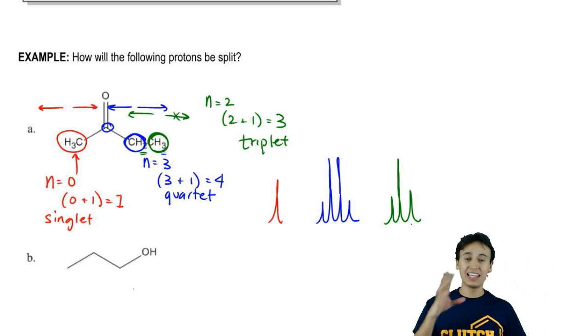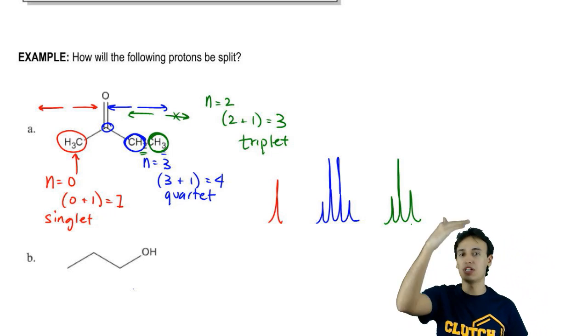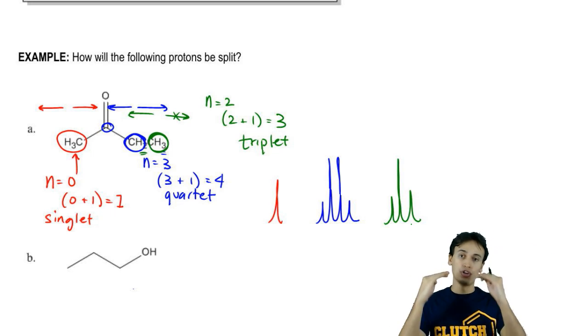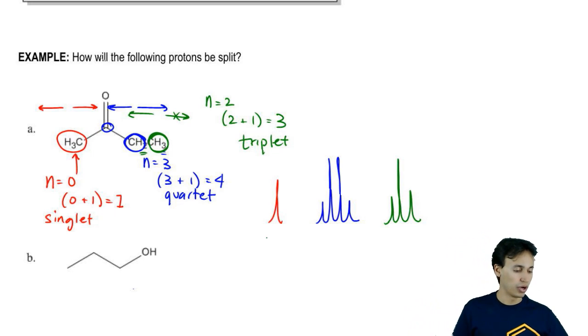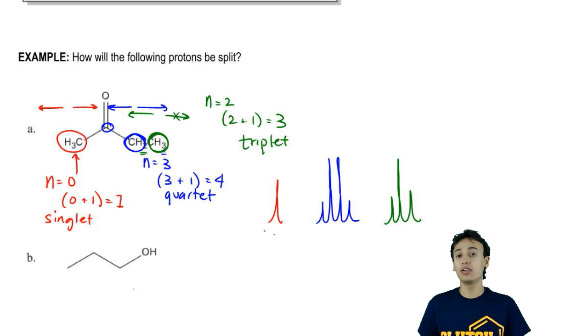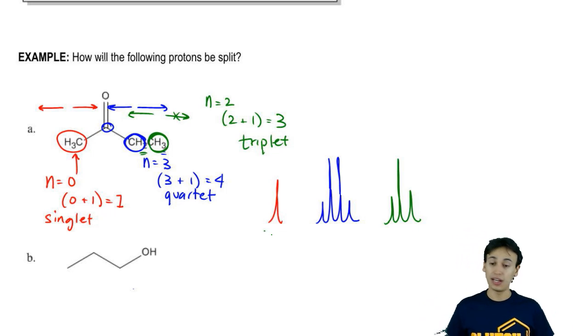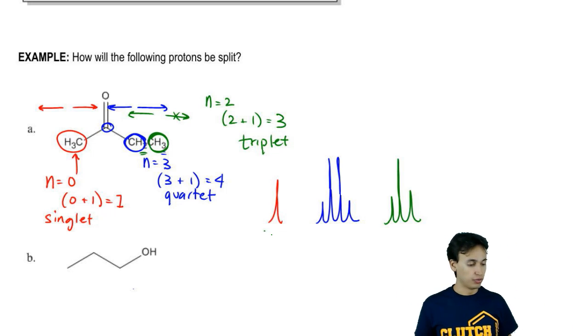By the way, don't worry about the heights here. It doesn't have to be a specific height or whatever. I'm just trying to show the ratios between the different splits. Now you know what a singlet, a quartet, and a triplet would look like based on Pascal's triangle. So now I'm going to have you guys do B on your own.